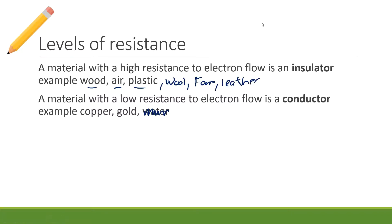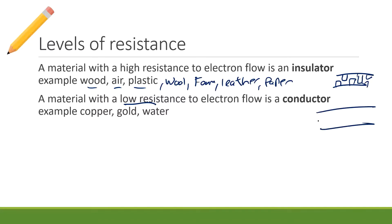A material with low resistance — where electrons can flow through really easily — is called a conductor. An insulator makes it really hard for electrons to move; a conductor makes it really easy. Copper, gold, water — these are all good conductors. Anything metal, iron, zinc are also good conductors. Anything usually shiny will be a good conductor.